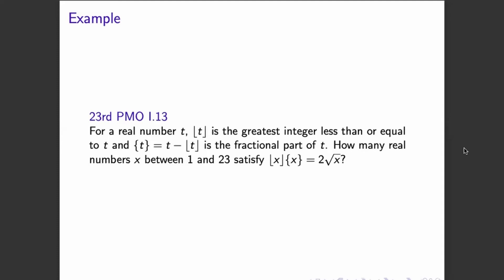How many real numbers X between 1 and 23 satisfy this equation? Integer part of X times the fractional part of X is equal to 2 square root of X.